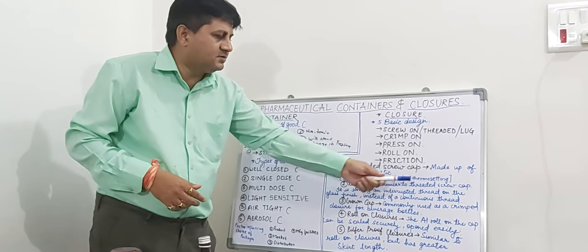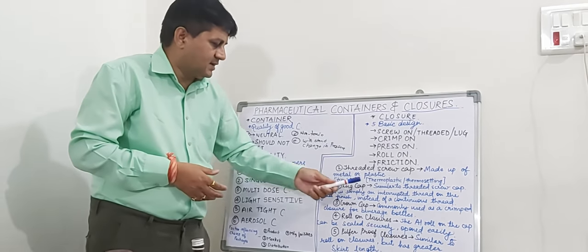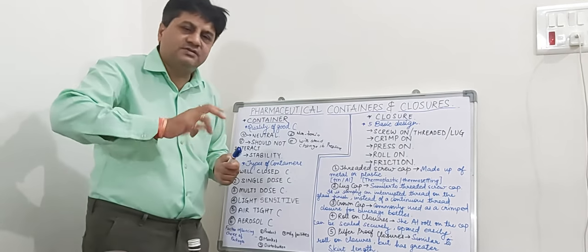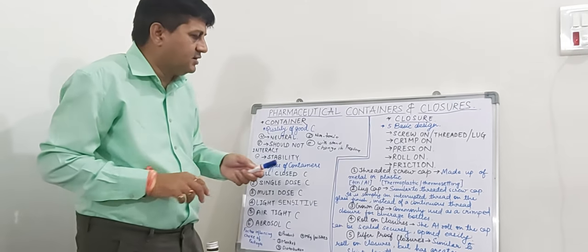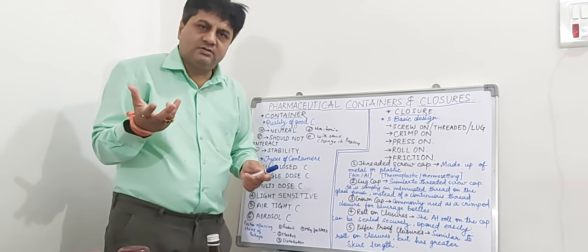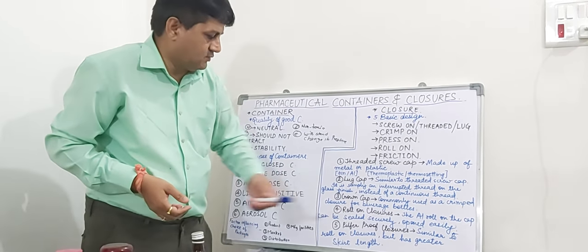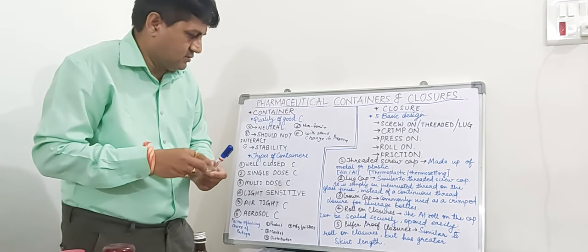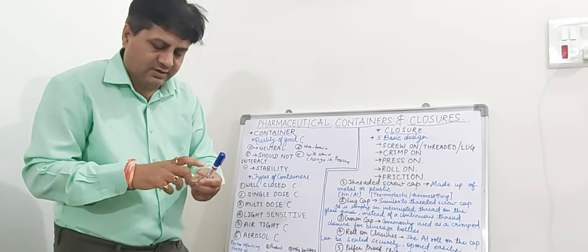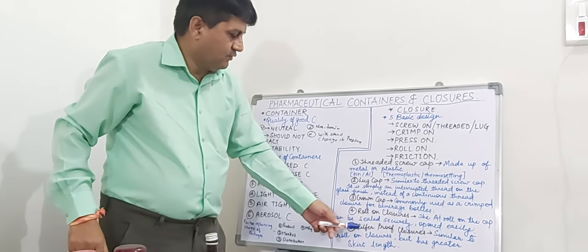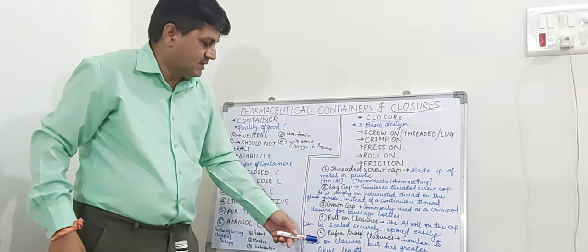The lug cap has a simply interrupted thread on the glass finish instead of continuous threading — it has only an interrupted thread. The crown cap is available on beverage bottles like Thumbs Up and other beverages. The roll-on closure has a sealed security and can be opened easily to apply the product by rolling. The last one is the pilfer-proof closure, which is similar to the roll-on closure but has a greater skirt length.